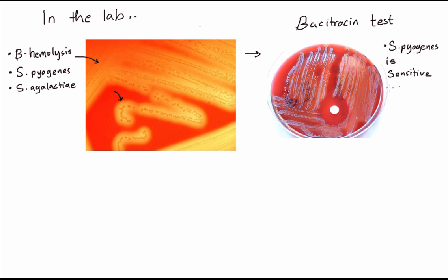Strep pyogenes is sensitive to bacitracin, that's why you see that big halo around it, whereas strep agalactiae is resistant.